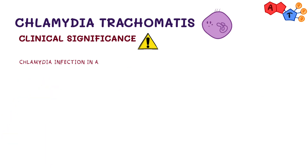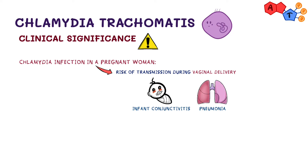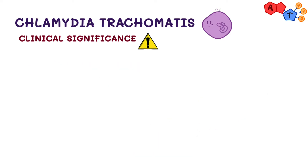If Chlamydia affects a pregnant woman, there's a risk for the infection to be transmitted during vaginal delivery, resulting in infant conjunctivitis and pneumonia. This occurs when the baby is 4 to 12 weeks old. The classic feature of this pneumonia is a staccato cough, which means there is a noisy inspiration between each single cough.